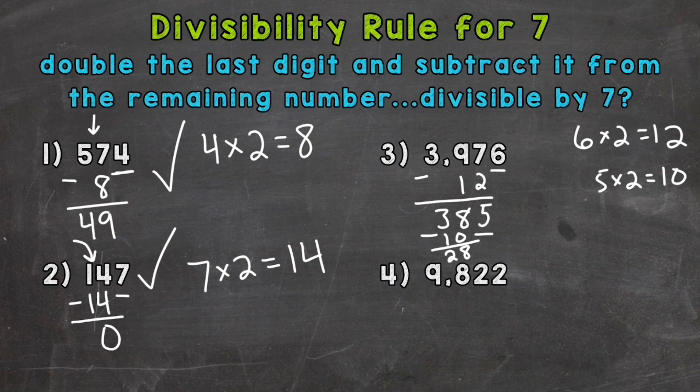That's much easier to work with than 385. Again, we just repeated the steps to give us a more manageable number to work with. So is 28 divisible by 7? Can we do 28 divided by 7 and get an answer without a remainder? Yes, 28 divided by 7 is 4. Therefore, our original number of 3,976 is divisible by 7 as well.